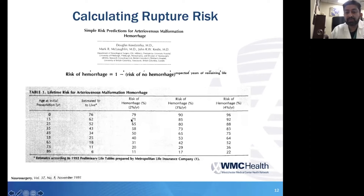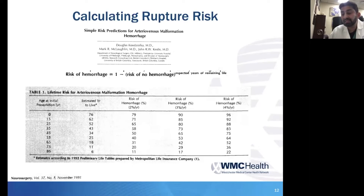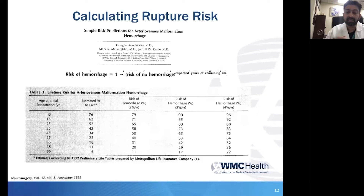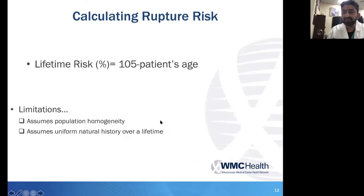In general, estimating 2% annual risk and a patient age of 15 at presentation gives a lifetime rupture risk of around 70%. If there are high-risk features — such as outflow stenosis and aneurysms — that increase risk to 4% per year, you can more confidently tell the patient and family that lifetime risk is closer to 90%. A more simplified formula is simply 105 minus the patient's age — much easier to calculate on the fly as a ballpark estimate of rupture risk.